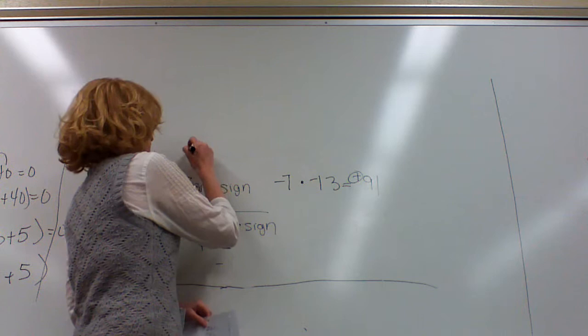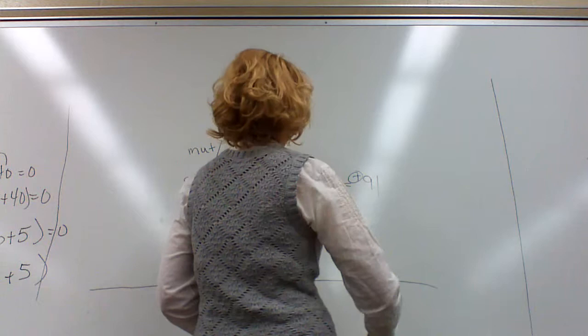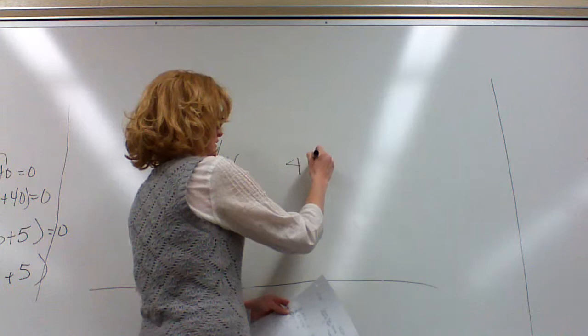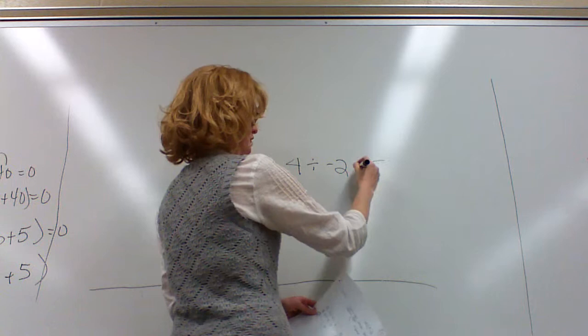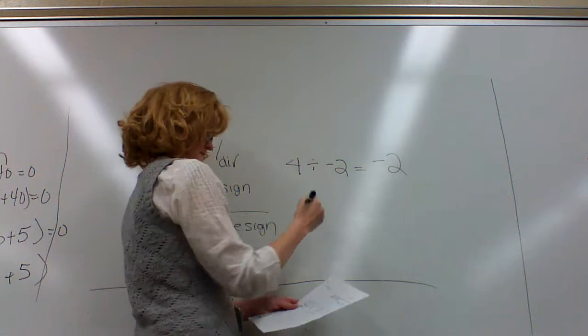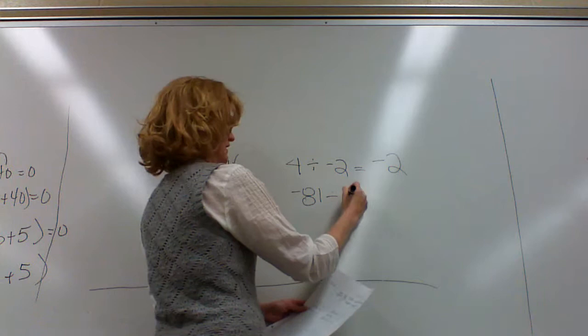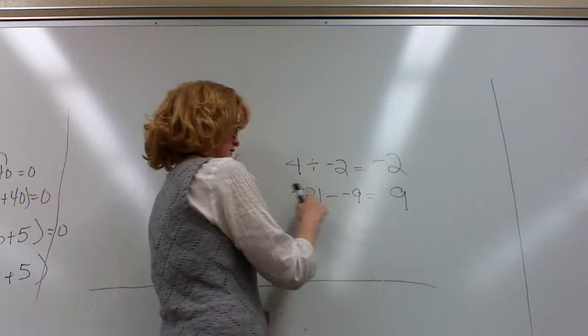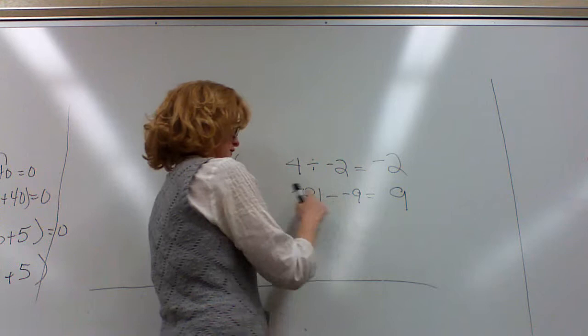These rules also apply with division. These are both multiplication and division. So 4 divided by negative 2. They're opposite signs, so the answer will be negative 2. 4 divided by 2 is 2. Negative 81 divided by negative 9. 9 goes into 81 9 times. They're both negative, so this will be a positive because both signs are the same.